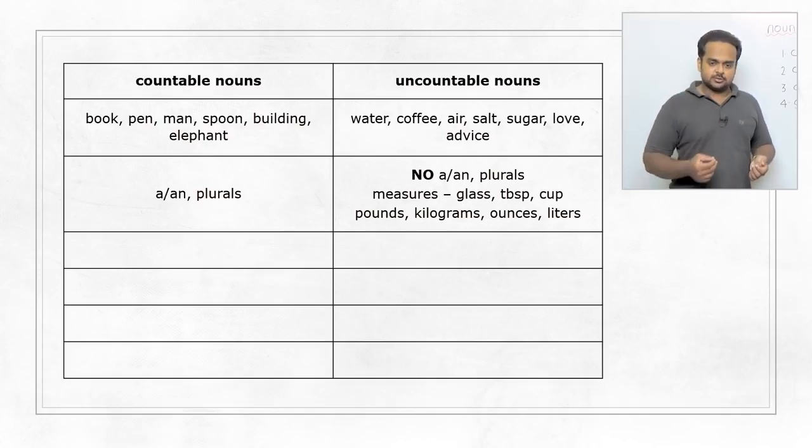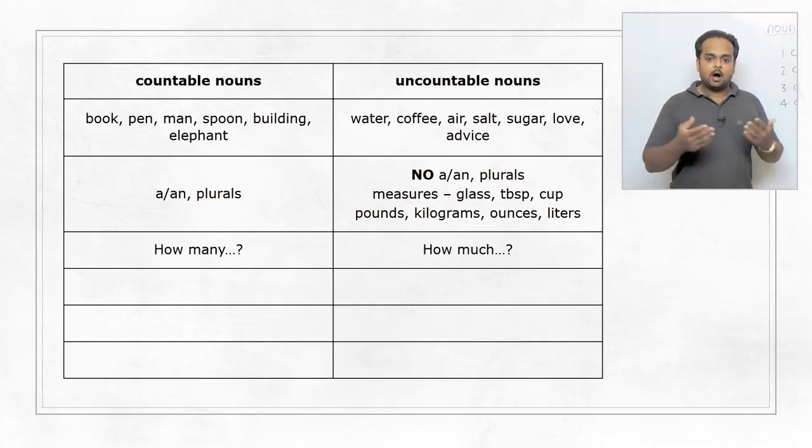To ask questions, we use the expression how many with countable nouns, like how many computers do you have in your office? And with uncountable nouns, we use how much. How much water is there in the bottle? Or how much sugar is there in the jar? Now with any of these questions, if you know the exact answer, you can give it. You can say there are 20 computers in my office or there's half a liter of water or four pounds of sugar in the jar. But what about if you don't know the exact number or quantity?